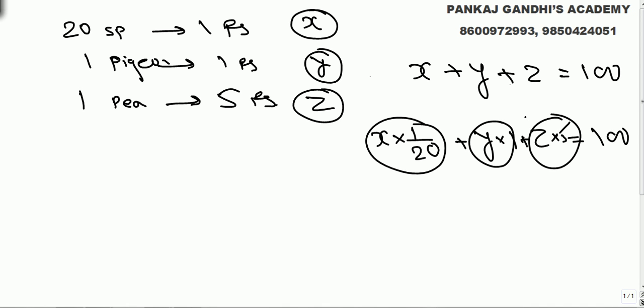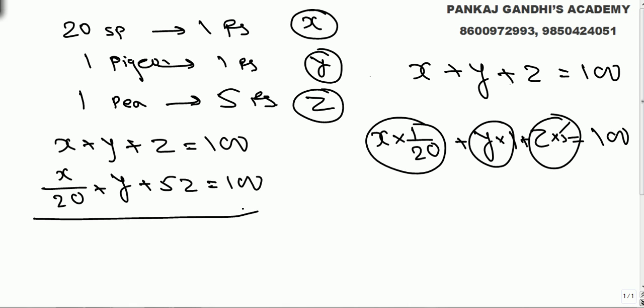So now we got two equations: x plus y plus z equals 100, and x by 20 plus y plus 5z equals 100. If we subtract them, y gets cancelled.